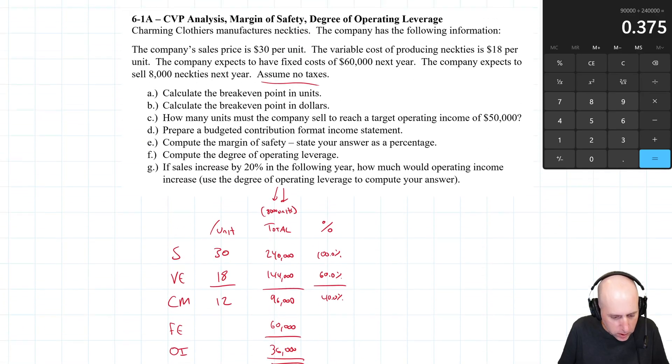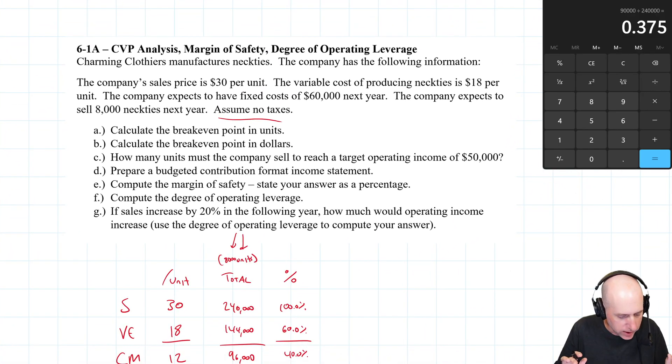So we've gone through problem 6.1, parts A, B, C, D, E. Part F asks us to compute the degree of operating leverage, and that's a confusing, tricky concept. So I'm going to stop this video here and we're going to pick up parts F and G in its own video, just on operating leverage, because I think it's a challenging concept. It's one that my students get wrong all the time, and I wanted to devote a longer amount of time to explain it and then to solve parts F and G. But that'll be in the next part of this video. Thanks so much for watching and I'll see you there.